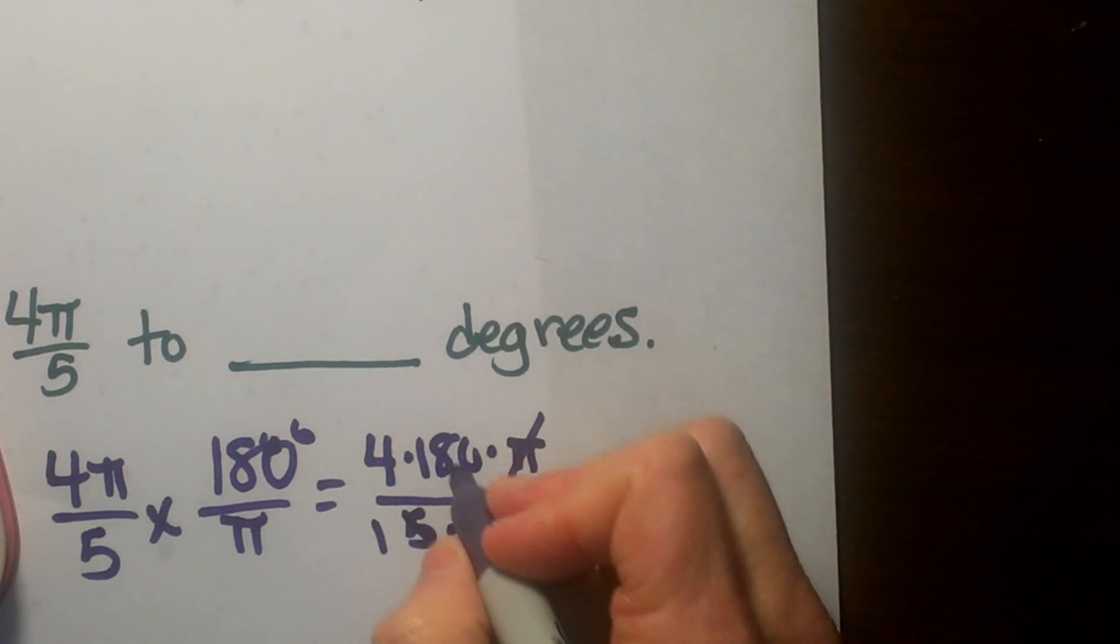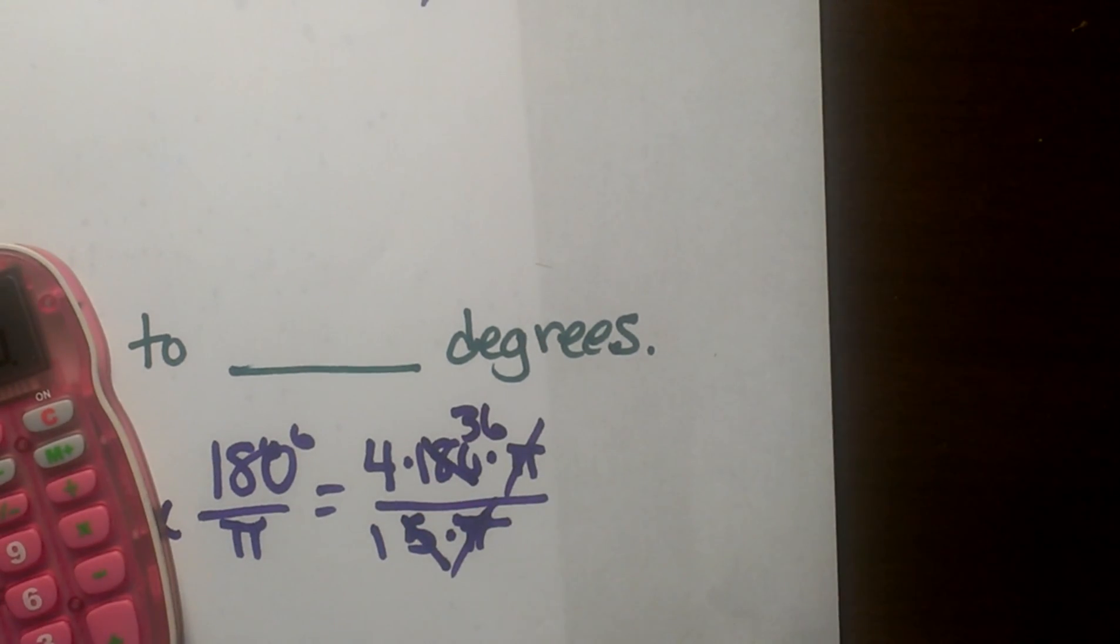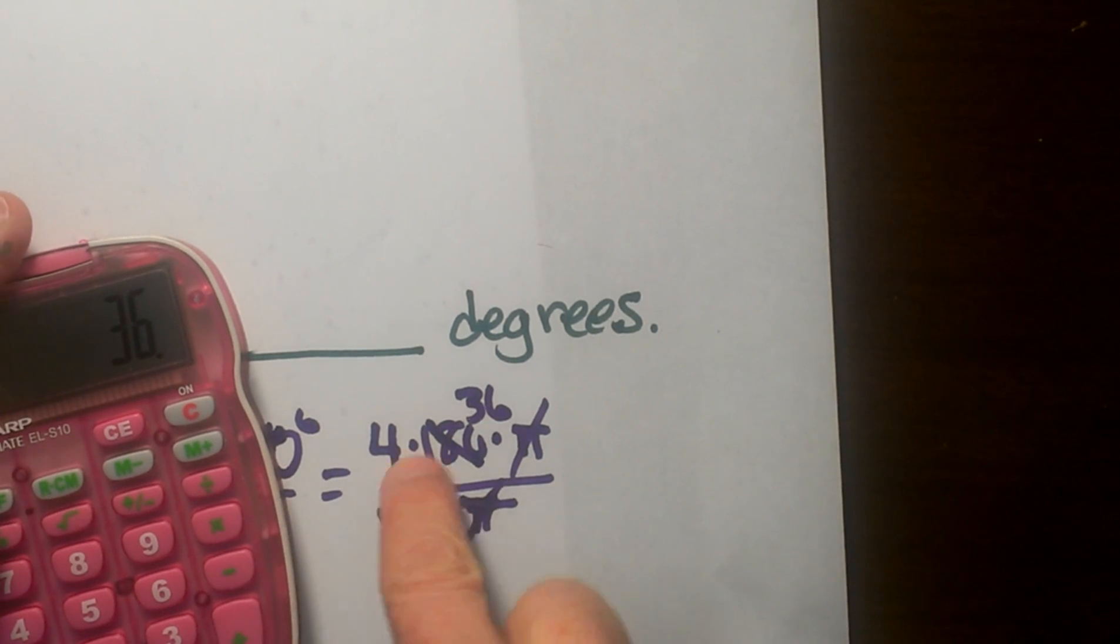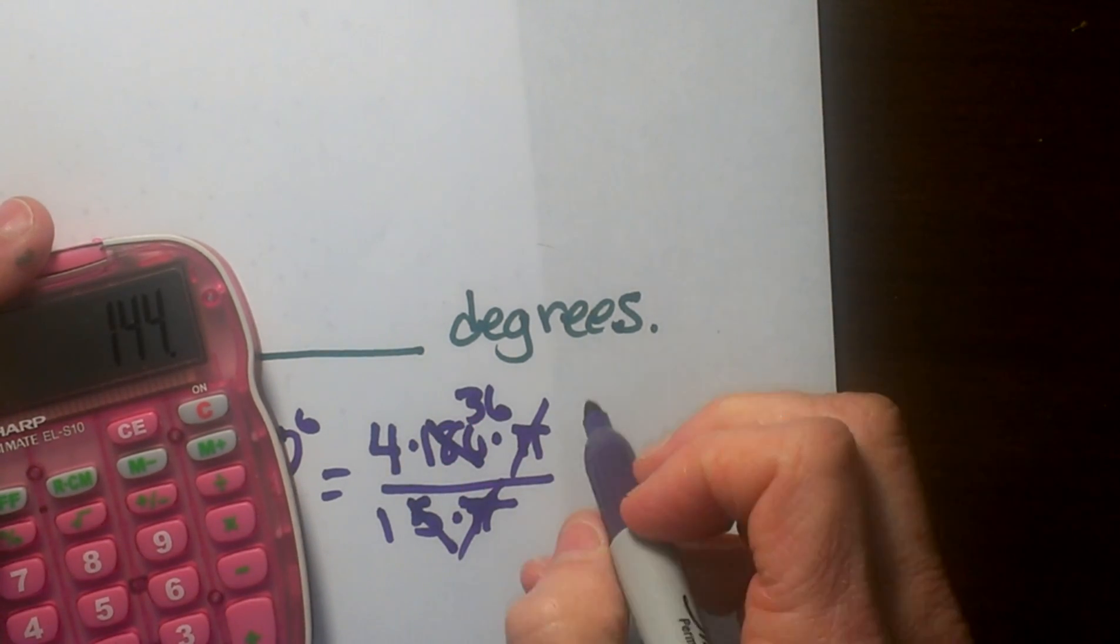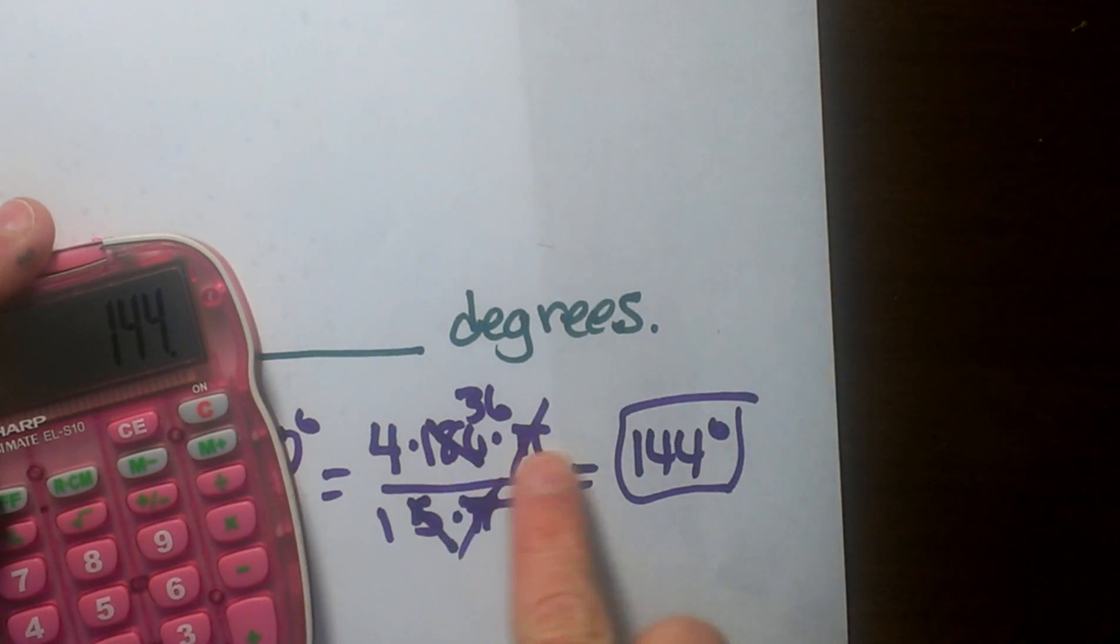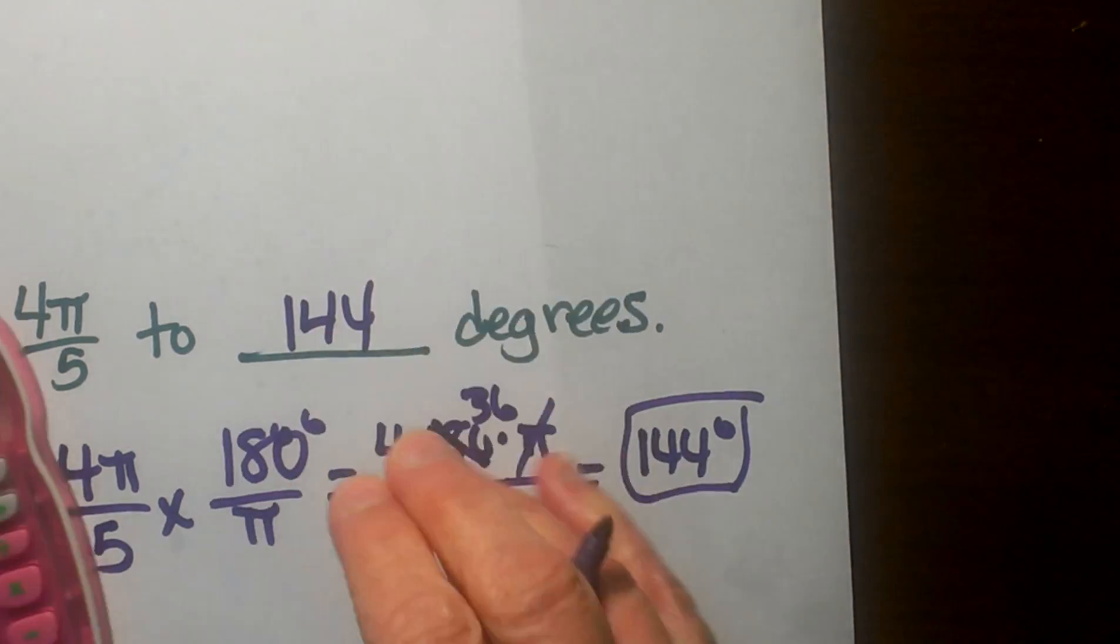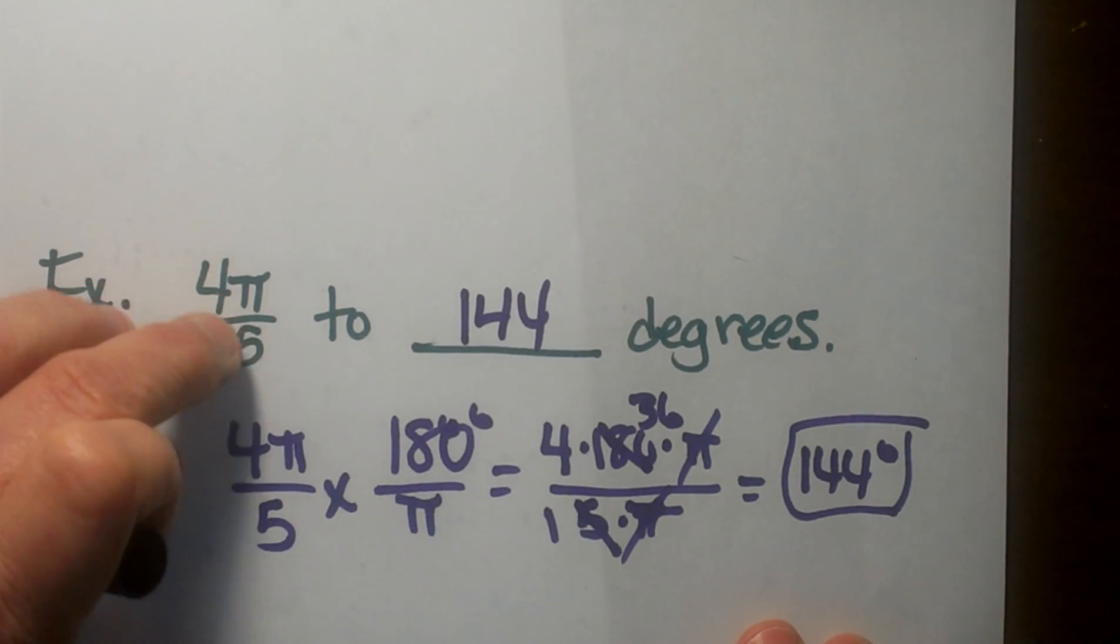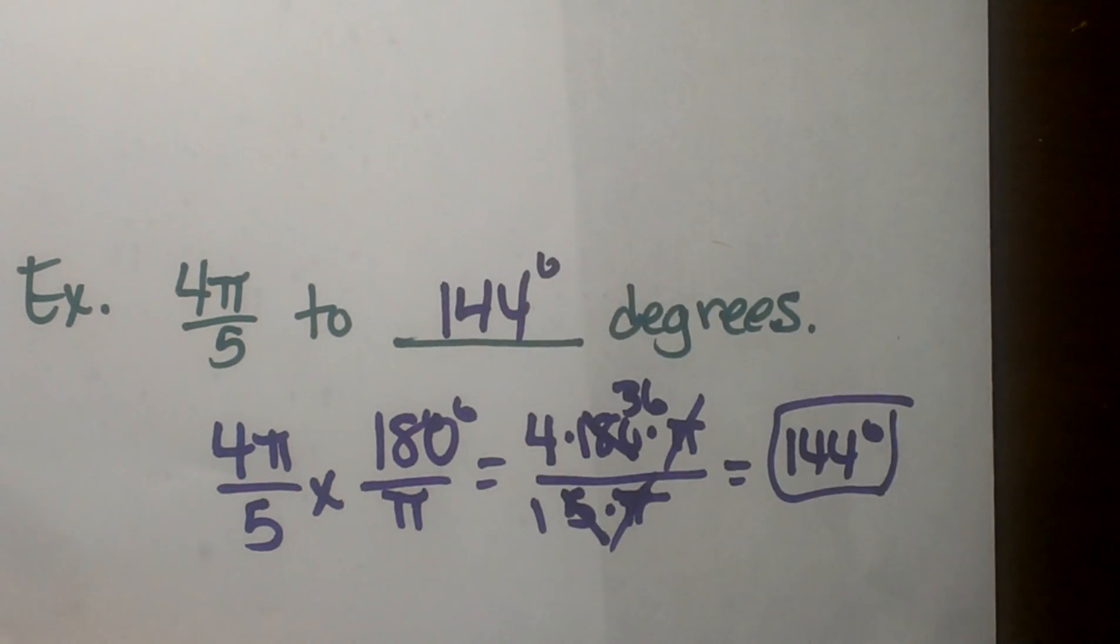So I can cancel this out, make that 1, cancel that out, make that 36, so I've reduced it by 5. So I have 4 times 36 and that gives me 144. So that's the degree measure once I multiply this out. So 4π/5, or four-fifths π however you want to say it, is equal to 144 degrees.